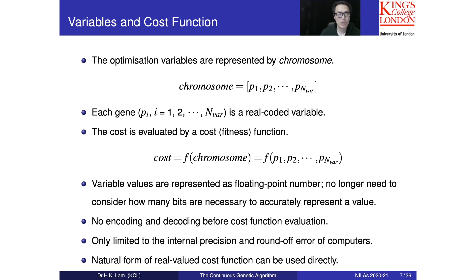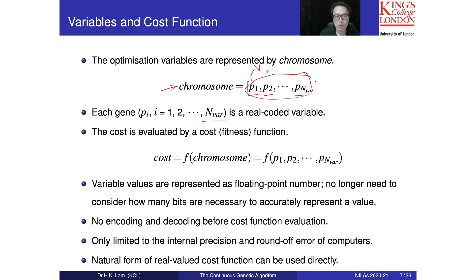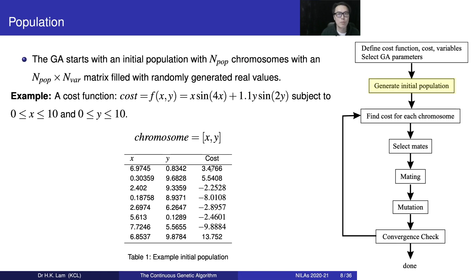The variables and cost function are very similar to the binary genetic algorithm. The chromosome, instead of a binary string, uses real values: parameter one, parameter two, up to parameter n, where n is the number of decision variables depending on the application. For example, p1 might represent voltage and p2 current, which are fed into the cost function to find the cost. No coding is required — we can directly compute the cost. This corresponds to this point in the flowchart after defining the cost function and number of decision variables.